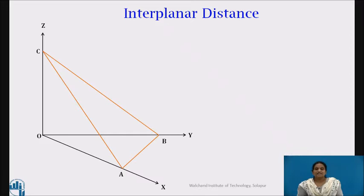Let ABC be one of the family of parallel lattice planes in the crystal. Let the Miller indices be HKL and the intercept on the crystallographic axis are OA, OB and OC respectively.